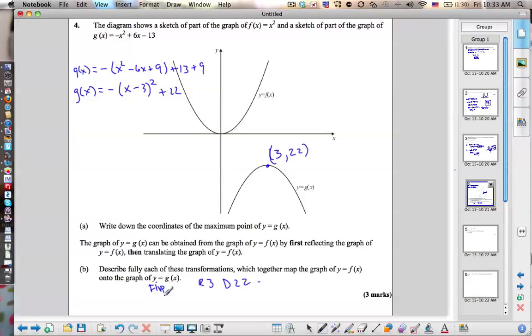And then right 3, and then down 22. Obviously this is shorthand, you'd have to write a sentence described fully. This isn't very fully, but it's hard to write on this thing. So there's the next 2, 3 and 4. Stay tuned for 5 and 6.